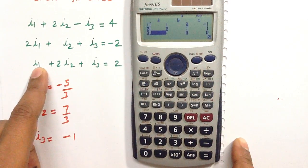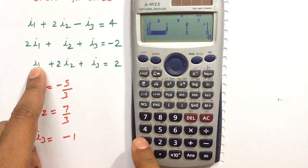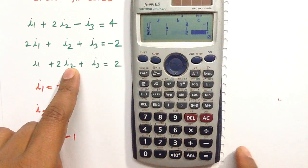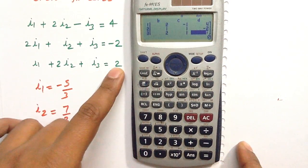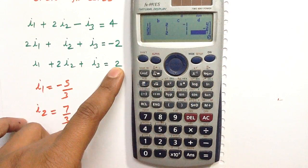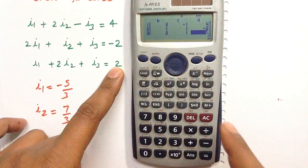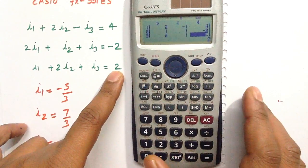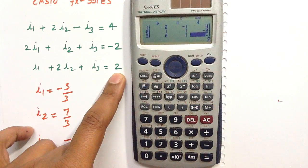Coming to the third equation, the coefficient of I1 is 1. Coefficient of I2 is 2. Coefficient of I3 is 1. The constant appearing on the right hand side of equation 3 is 2. So press 2 then equals. You have fed all the values of equation 1, equation 2, and equation 3.